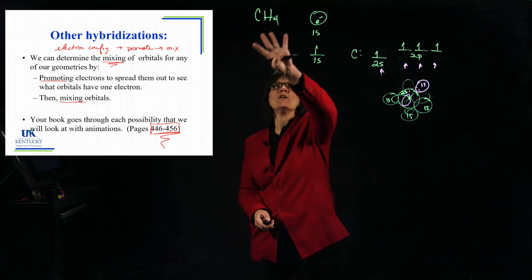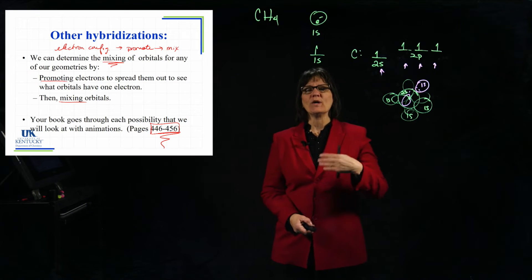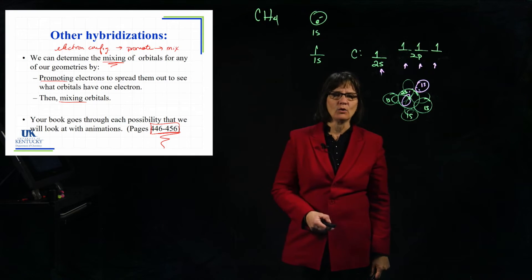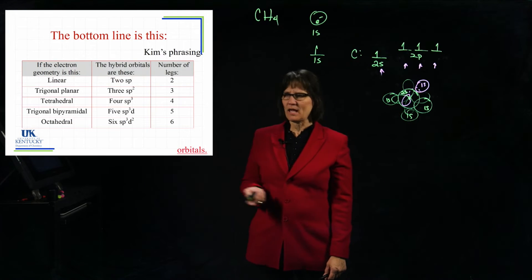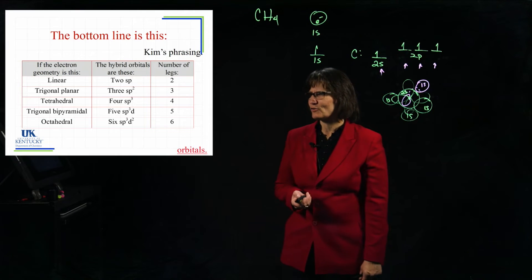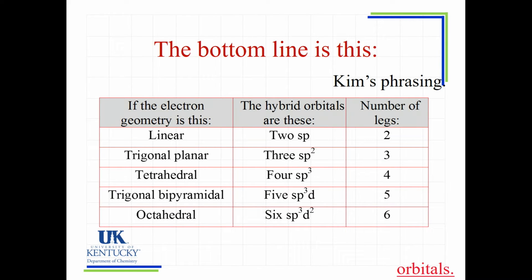You don't have to really go through it in detail every time. I wanted to do it in detail for carbon so you understood the reason for the hybridization - the reason for considering hybrid orbitals rather than plain atomic orbitals. But there is a bottom line. If you go through and figure out how many legs it has and you know the geometry from that - this would be the electron geometry where you're considering lone pairs as well as bonded atoms - those are the five geometries that we know, and that would give you these hybrid orbitals. If the molecule is linear, we have two SPs.